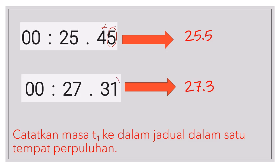Tapi kalau ini adalah nilai kosong, 1, 2, 3, 4, jadi tempat perpuluhan ini dikegarkan. Nombor di tempat perpuluhan itu dikegarkan. Jadi dapat 27.3.